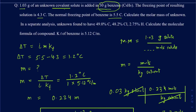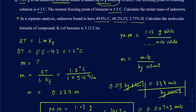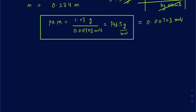This question has an additional part: a separated analysis found the unknown compound contains 49% carbon, 48.2% chlorine, and 2.75% hydrogen, and you need to figure out the formula. When given percentages, going back to Gen Chem 1, you can figure out the empirical formula — and once you know the molar mass, you can determine the molecular formula. First, verify the percentages add up to 100, then treat them as grams: 49.0 g carbon, 48.2 g chlorine, 2.75 g hydrogen.